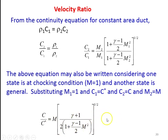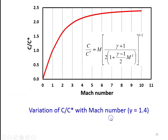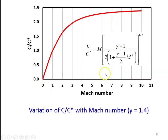We plot the equation in the graph, showing the variation of C/C* with respect to Mach number. The red color line indicates how C/C* varies with Mach number starting from 0 to 10. This curve is applicable for γ = 1.4.